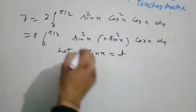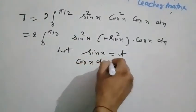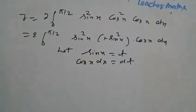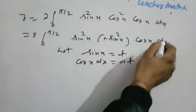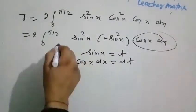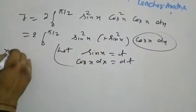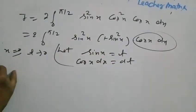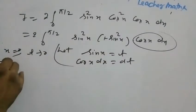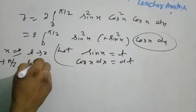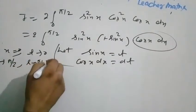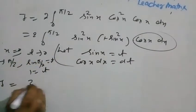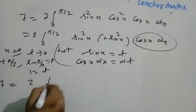Let t equal to sin x. Differentiating, cos x dx equals dt. Limit change: when x equals 0, t equals sin 0 equals 0; when x equals pi by 2, t equals sin(pi by 2) equals 1. So I equals 2 times integration with limits 0 to 1.